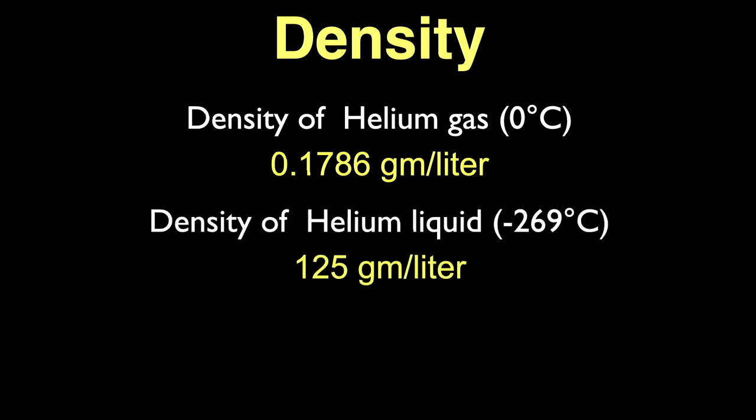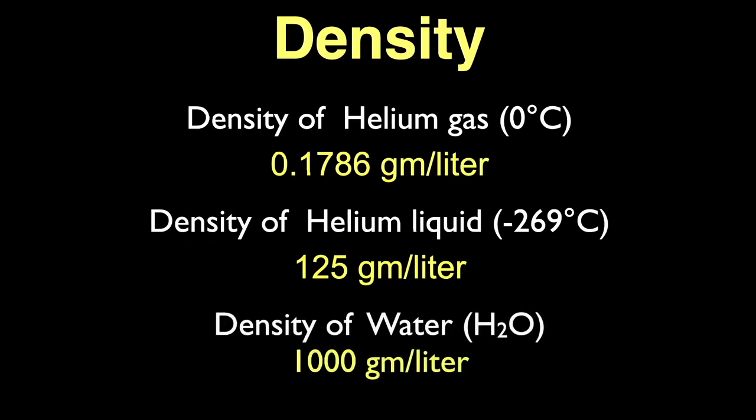In its liquid state, at minus 269 degrees Celsius, it's 700 times as dense at 125 grams per liter. Remember that water has a density of 1,000 grams per liter, or in more common terms, 1 gram per cubic centimeter.